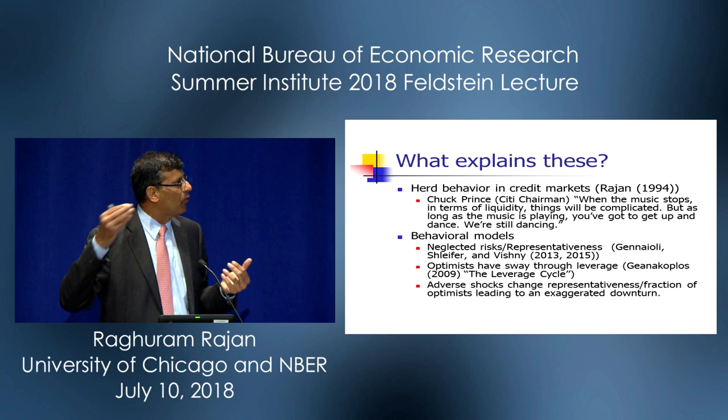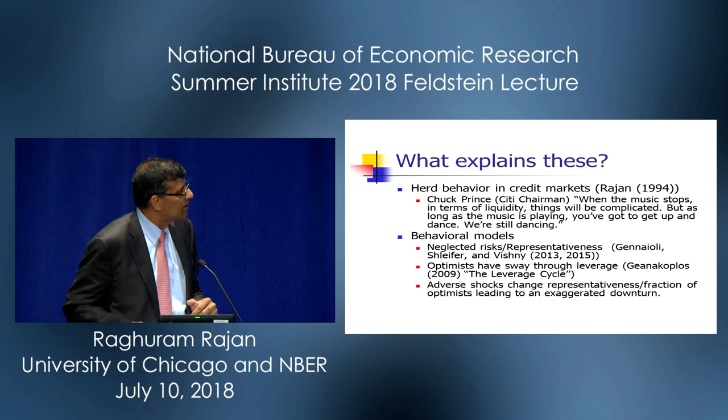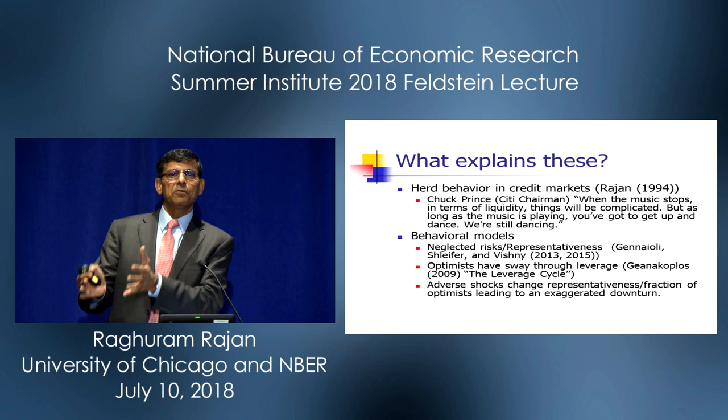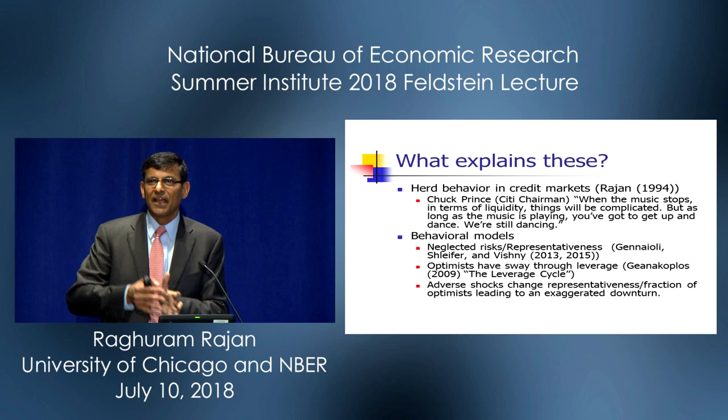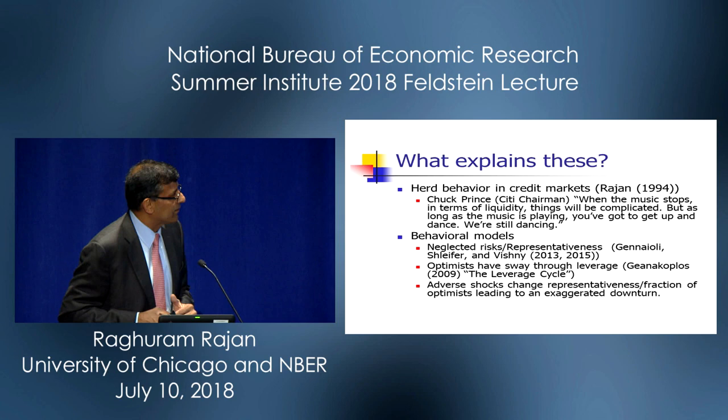There's work by Gina Coppolis where, essentially, when you have a combination of the possibilities of leverage as well as a variety of people — optimists and pessimists — because the optimists can borrow to invest in assets, you get a preponderance of optimists in the upswing. But in the downswing, because these are highly levered, they go bust, go out of the market, and now you have a preponderance of pessimists and a switch in asset prices.